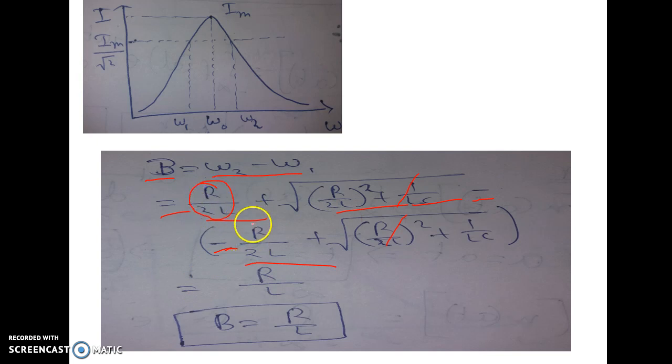So basically the expression will be r by 2L plus r by 2L and so you will get the expression equal to r by L. So this is very important result that is, for the series RLC resonating circuit, the bandwidth is given by the series resistance by series inductance value. So basically bandwidth equal to r by L. This is very important formula, you keep it in mind.